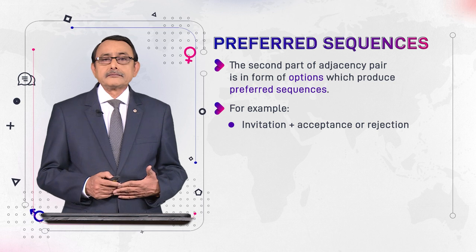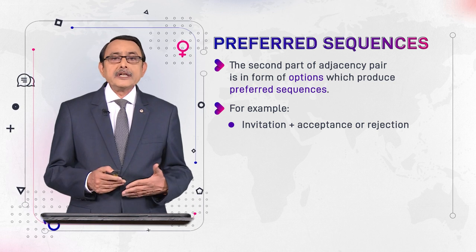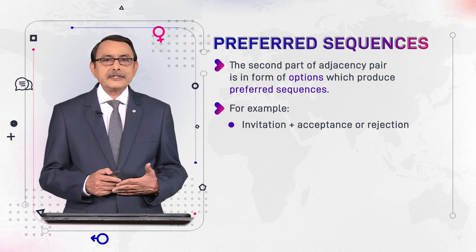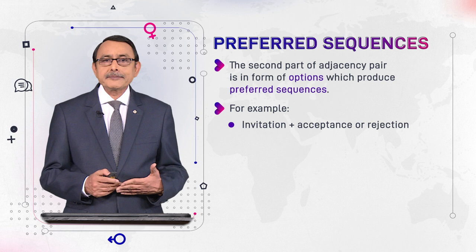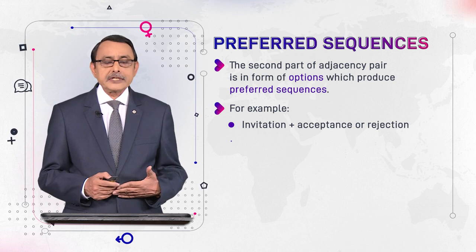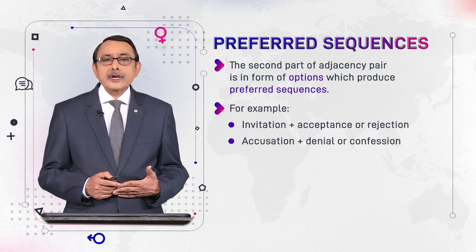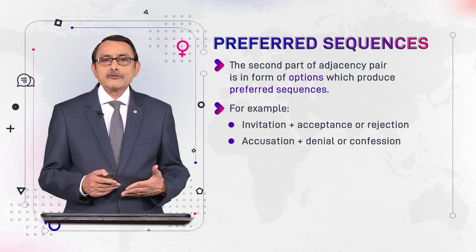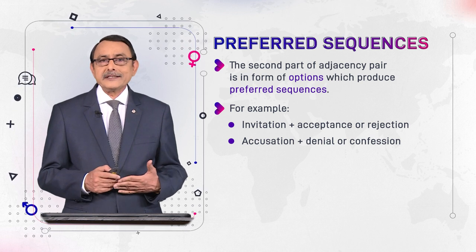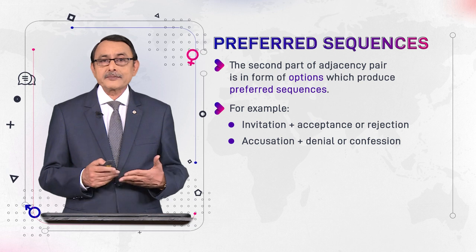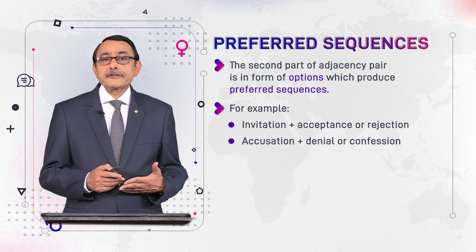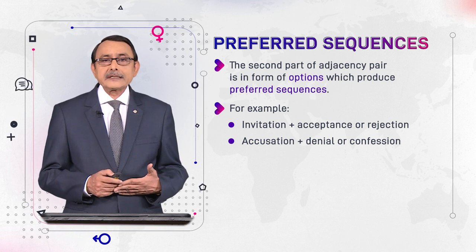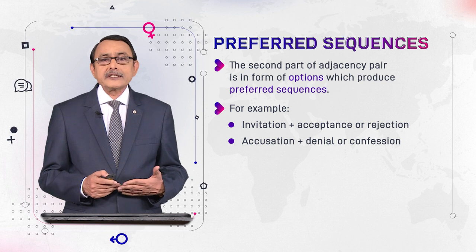For example, if somebody makes an invitation, the expected first answer — that is preferred — would be acceptance, and the unexpected answer would be rejection of the invitation. Similarly, if speaker A accuses, in reply to that, speaker B would deny it. This is expected and this is preferred. If speaker B accepts the accusation, it would be a confession, and this is dispreferred.